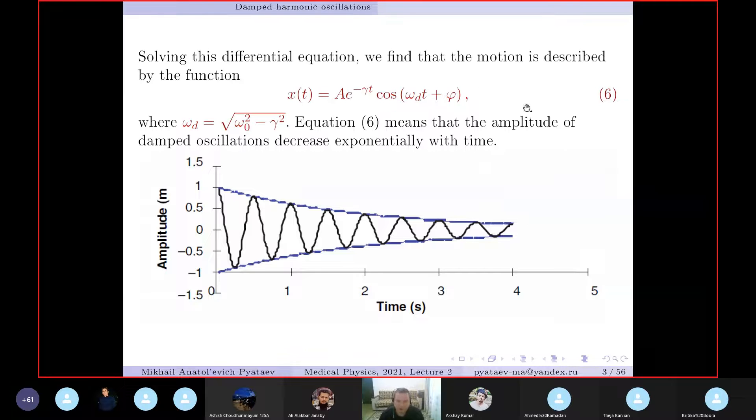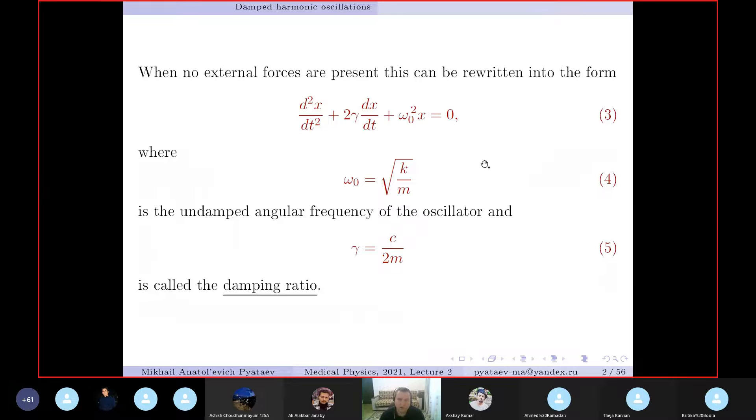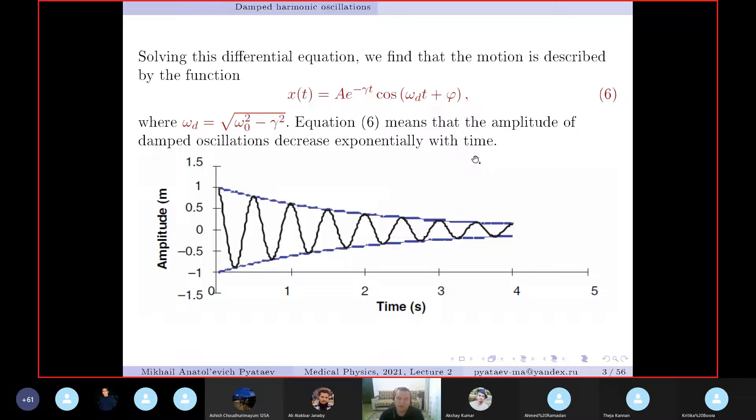The solution is given here. It's not easy to derive, but easy to prove by substitution into equation three. The solution is similar to undamped oscillations but includes an exponential decay factor e^(-gamma*t) and amplitude.